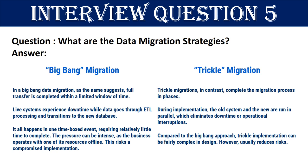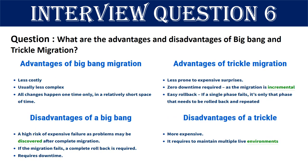Trickle migrations, in contrast, complete the migration process in phases. During implementation, the old system and the new are run in parallel, which eliminates downtime or operational interruptions. Compared to the big bang approach, trickle implementation can be fairly complex in design but usually reduces risks. Question 6: What are the advantages and disadvantages of big bang and trickle migration?